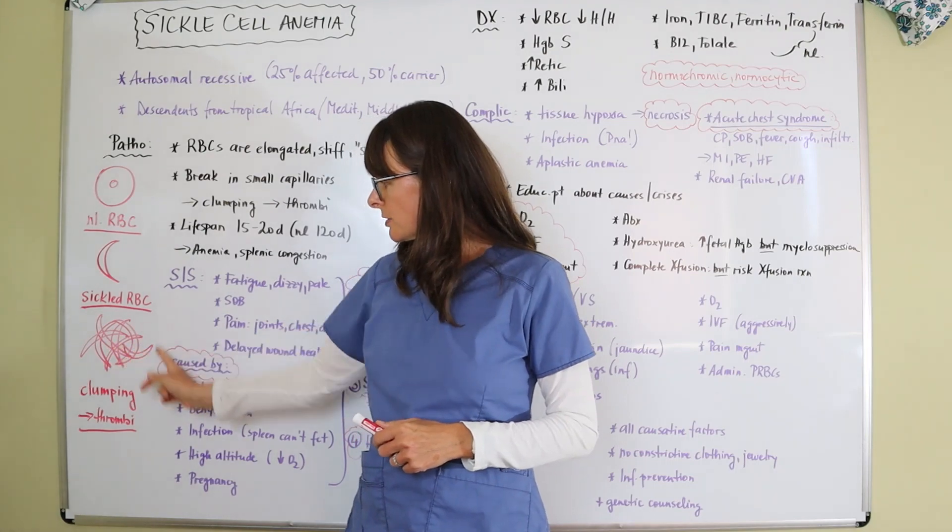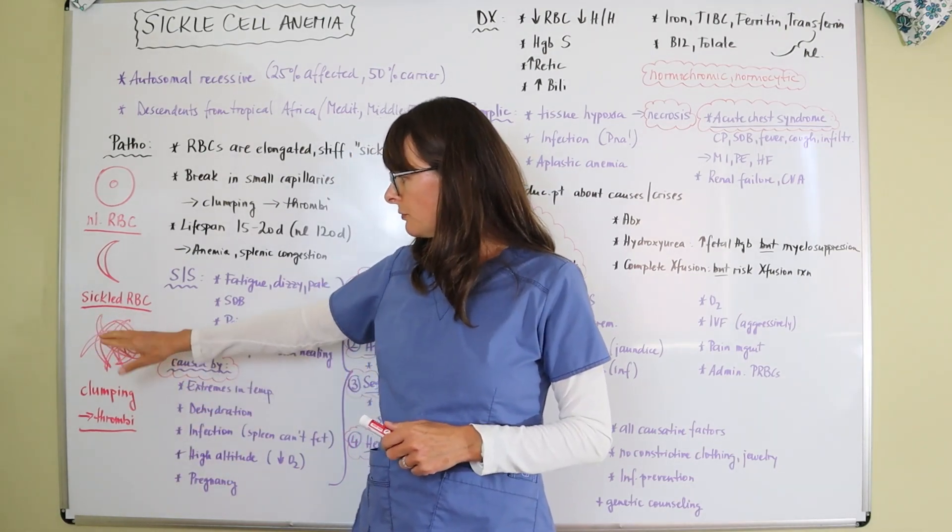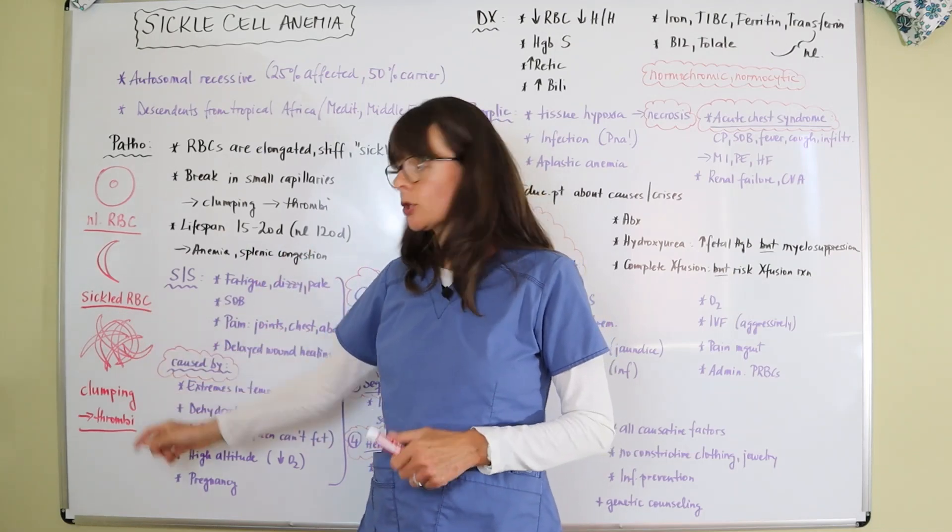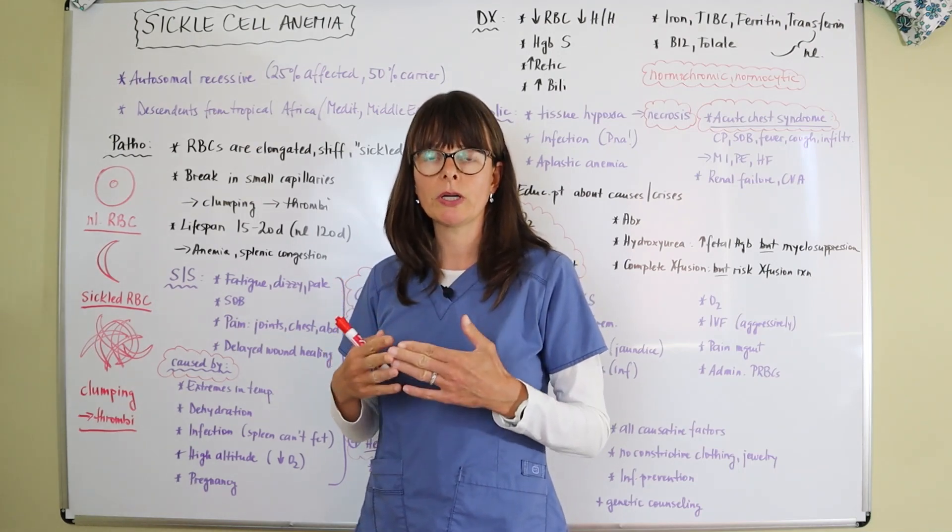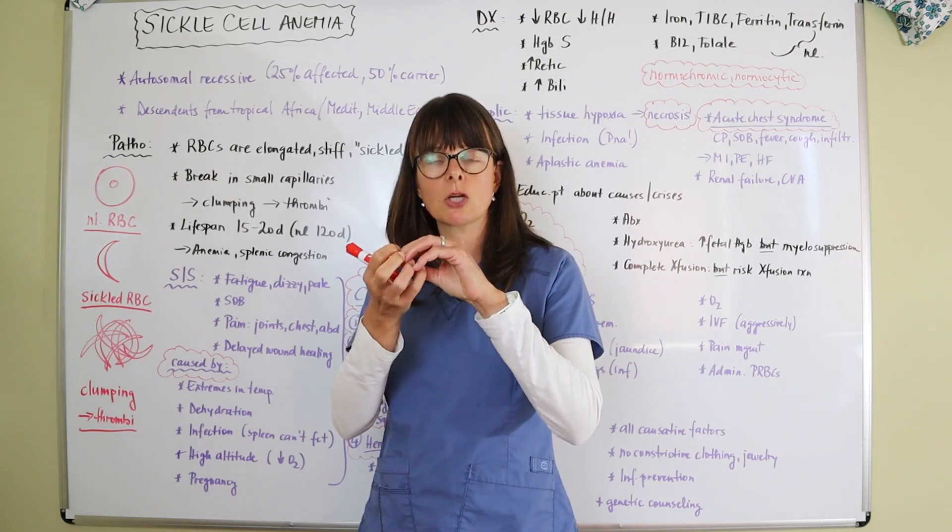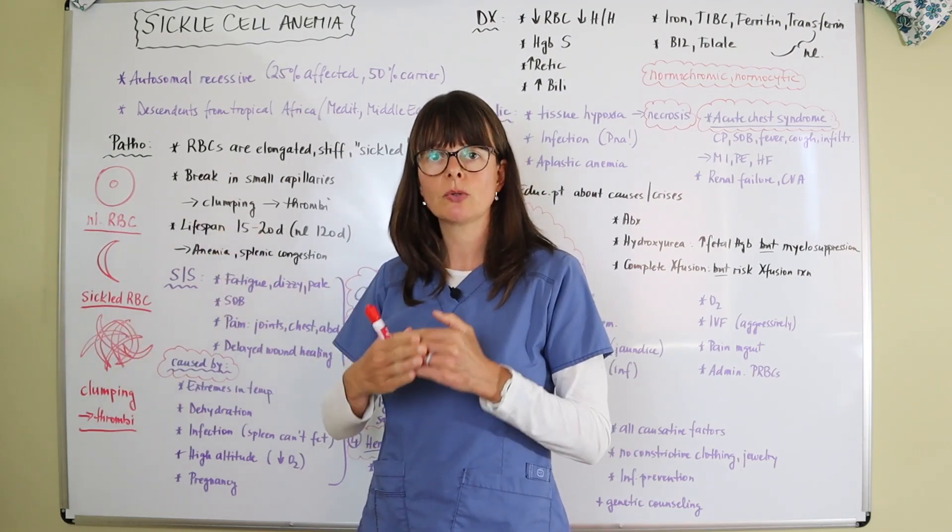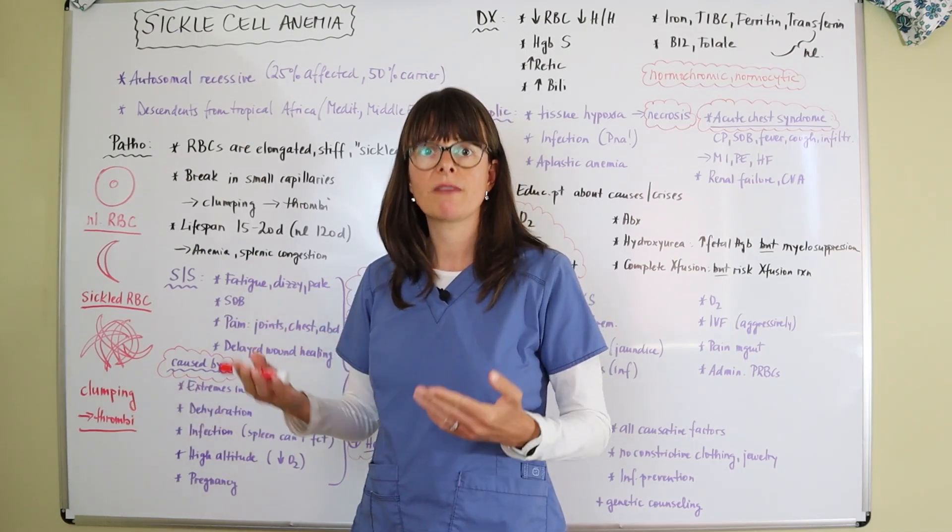They tend to clump together. So a bunch of these sickle cells here have come together and they are clumped now. If you imagine they're in a very small blood vessel, this clumping can lead to a thrombus. Then the part that's distal to that part of the blood vessel will be affected in terms of having hypoxia.